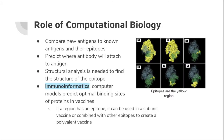Computational biology has played a big role in helping design and make vaccines. It has helped compare new antigens to already known antigens and their existing epitopes, and can also predict where antibodies will attach to an antigen. Current software can run structural analysis to find the structure of an epitope. A program called immunoinformatics uses computer models to predict optimal binding sites of proteins in vaccines. If a region has an epitope, it can be used in a subunit vaccine or combined with other epitopes to create a polyvalent vaccine.